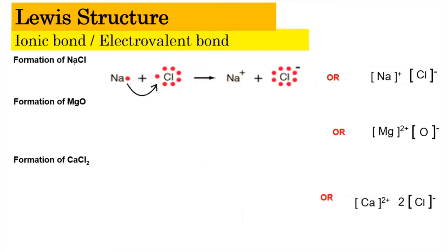The number of electrons gained or lost will be the charge of the ion. For example, in the formation of NaCl: Na, which is in Group 1, will have one valence electron. Cl, which has seven valence electrons, will need to receive one electron from sodium to achieve a stable octet arrangement. So one electron from sodium will be transferred to the chlorine atom, forming a sodium cation as well as a chloride anion, which can be written as Na⁺ and Cl⁻ with eight valence electrons.